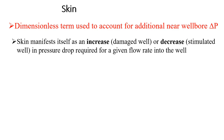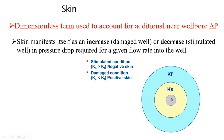Simulation is a process of determining the performance of the reservoir after a model has been built. But stimulation is a means of production enhancement. If you are having a decrease in skin or a negative skin, it is an advantage. But if you are having an increase in skin or a positive skin, it is actually an indication of damage. Close to the wellbore, we have our skin region that has been affected — either damaged or stimulated. Ks is the permeability of the skin and Kf is the permeability of the formation.